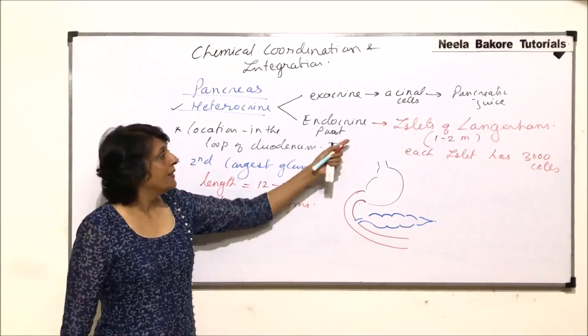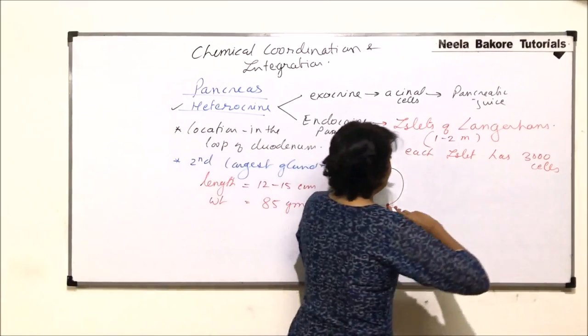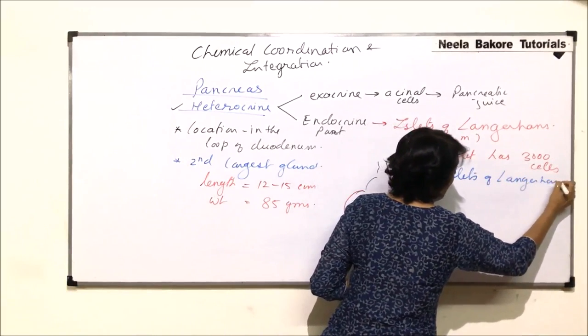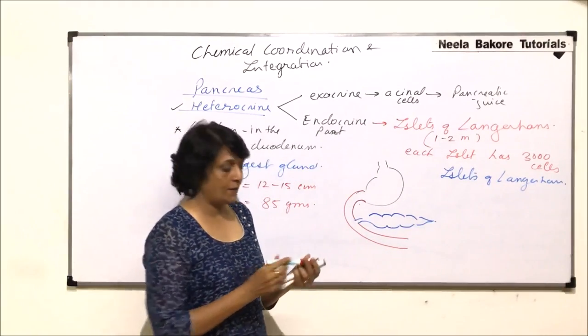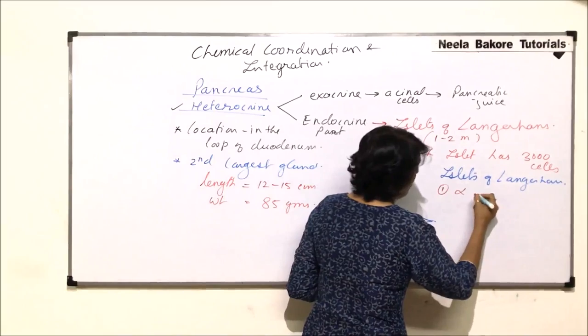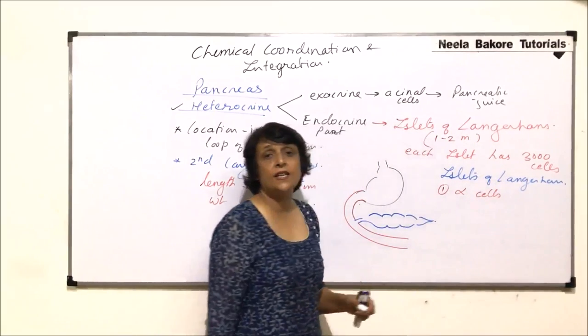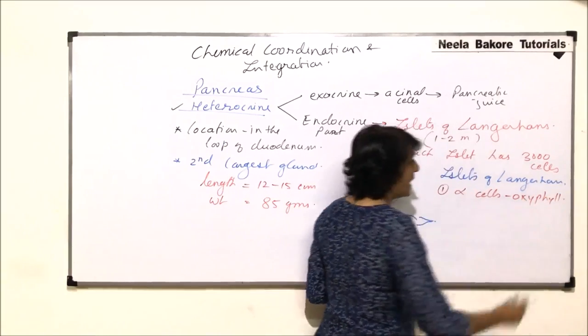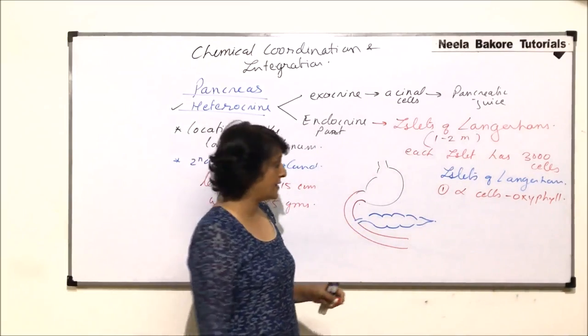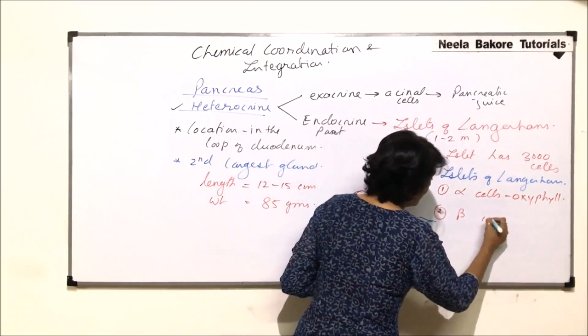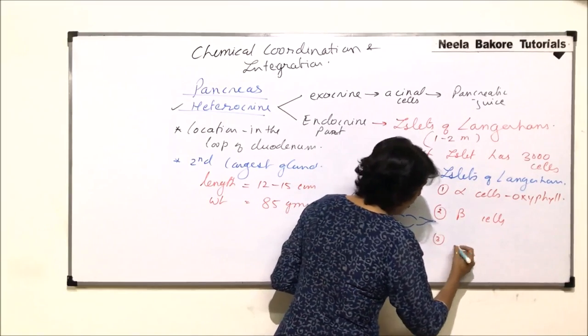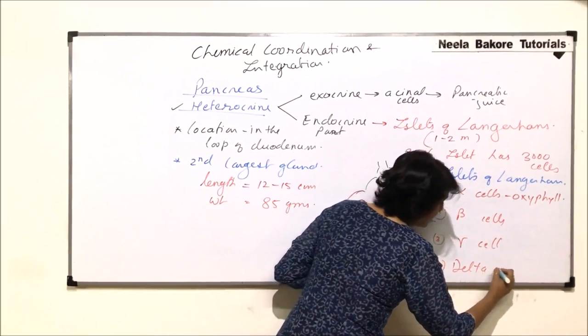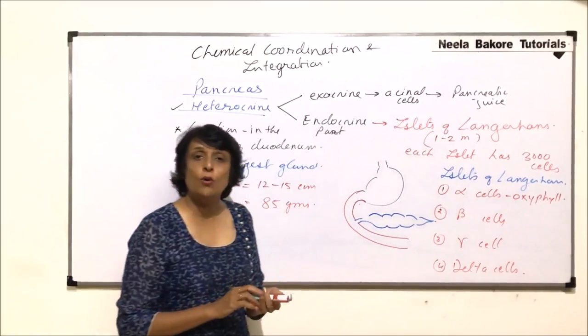These islets of Langerhans have four main types of cells. First cells are called alpha cells, and these alpha cells are also known as oxyphil cells. Second type of cells are called beta cells, third type are called gamma cells, and fourth are known as delta cells.